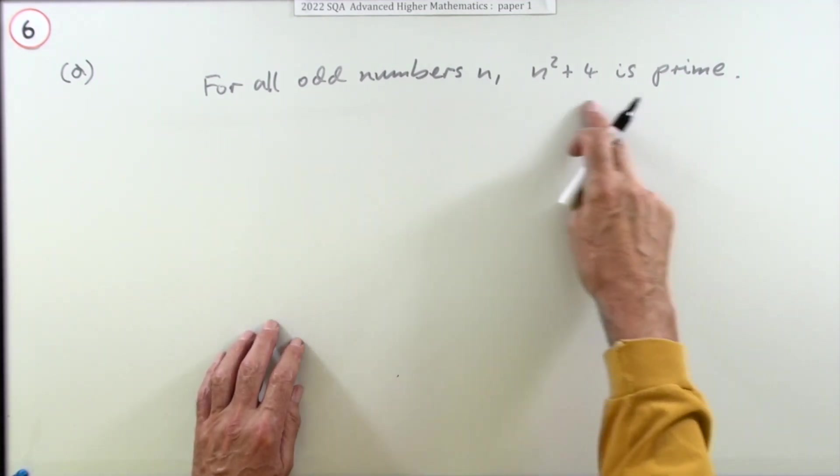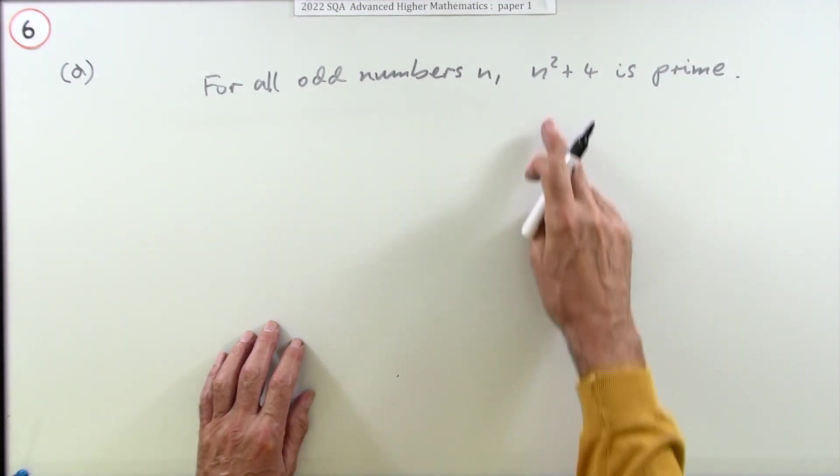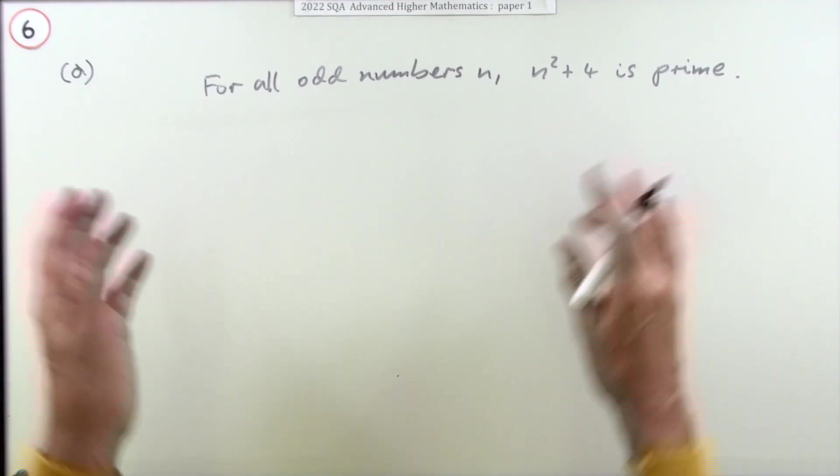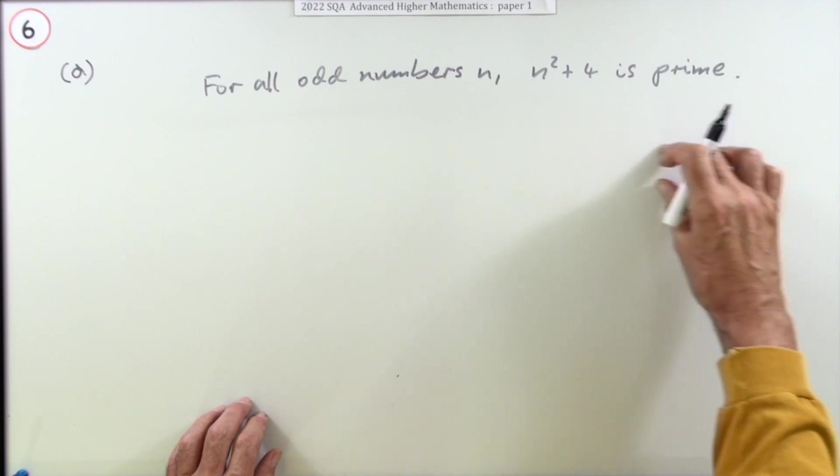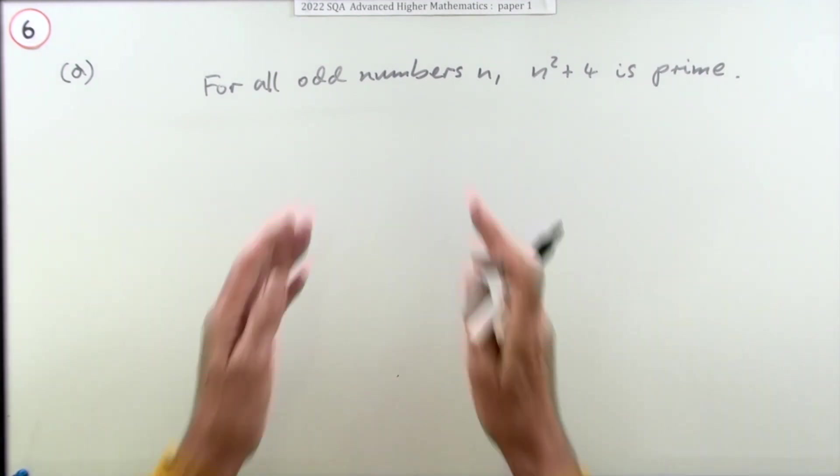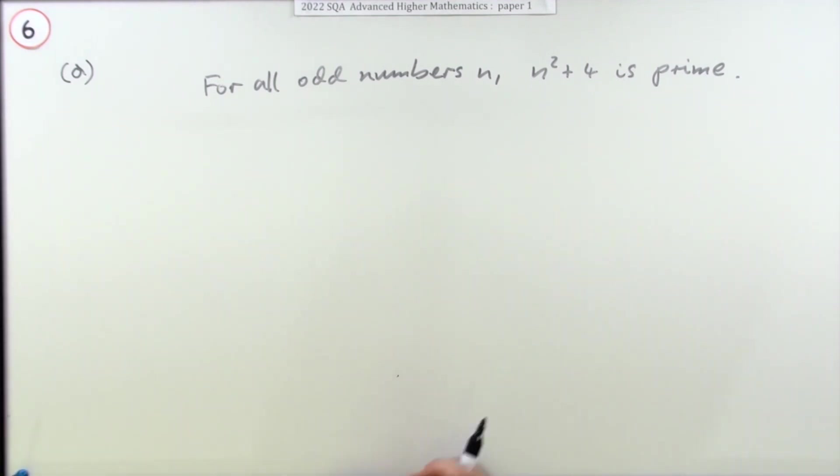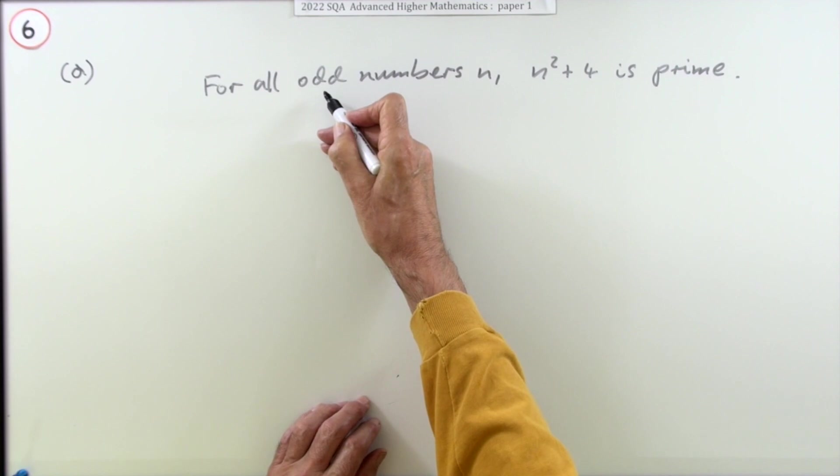Now finding that counterexample is trivial. Nobody will fail to find a number that proves that isn't prime. But the mark's not really for that. The mark's for the precision with which you put down your answer. It has to be almost like a legal document covering all eventualities.